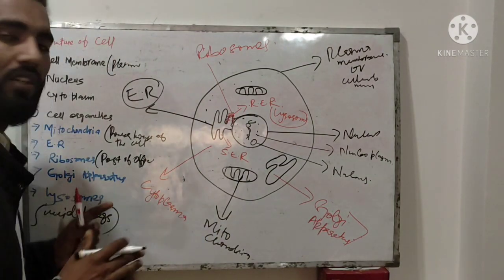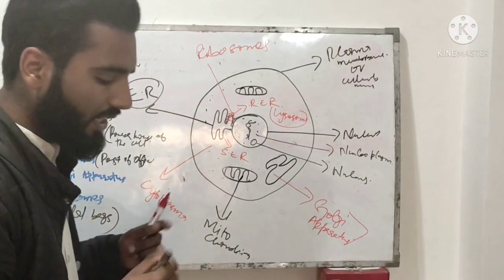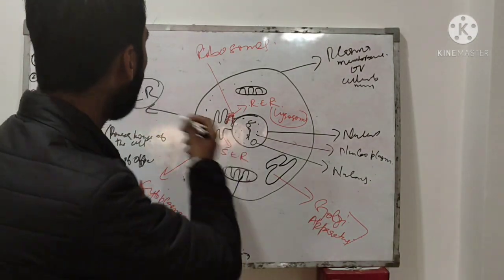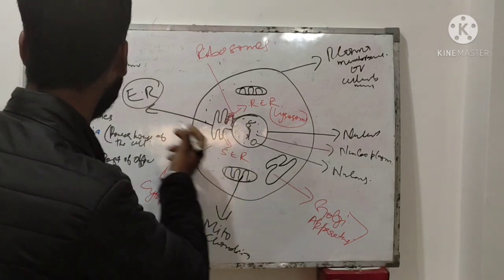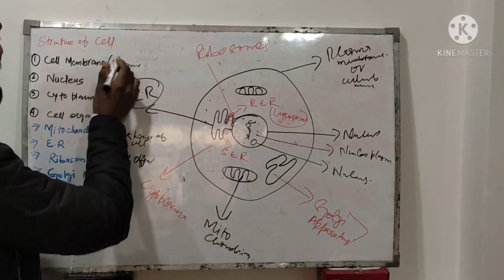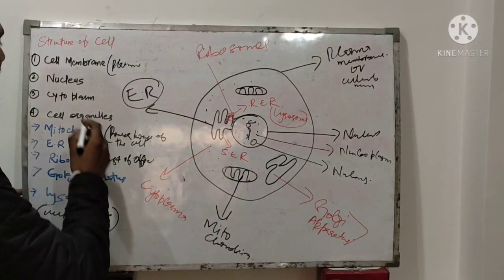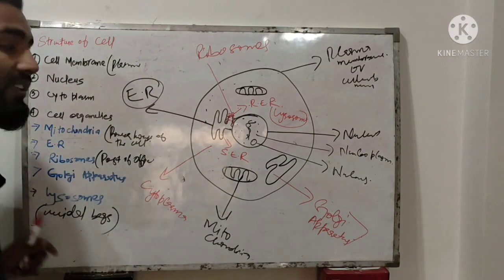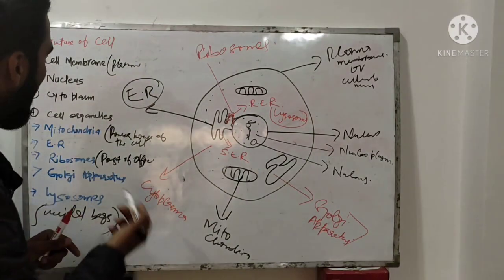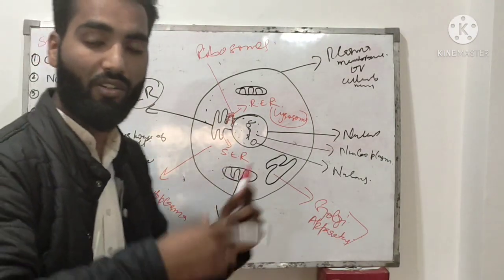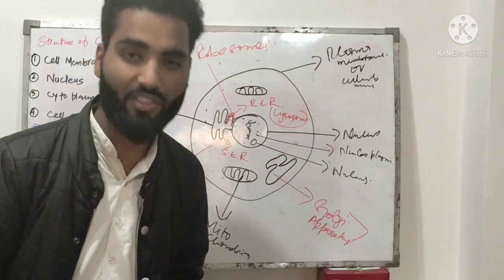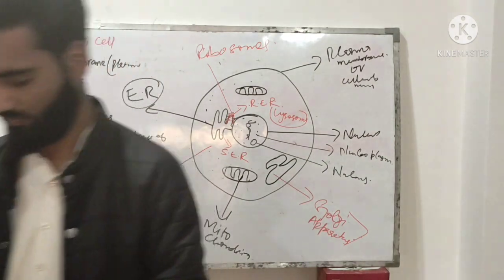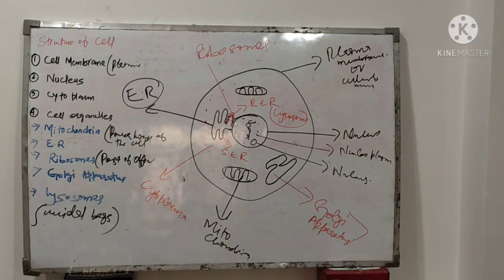So this was all about the cell. In the next lecture, we will talk about the organelles one by one — cell membrane, fluid mosaic model, nucleus, mitochondria, and the structures of mitochondria. Thank you.